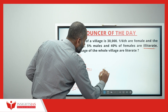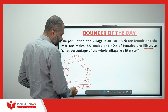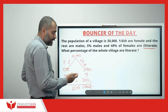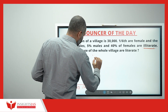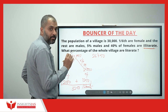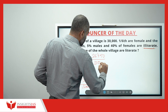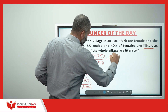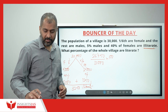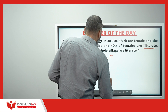Then, what percentage of the whole village are literate? Out of 30,000, if 3,250 are illiterate, then the remaining 26,750 are the literate population. Comparing to 30,000 into 100, the percentage is 89 1/6 percentage.